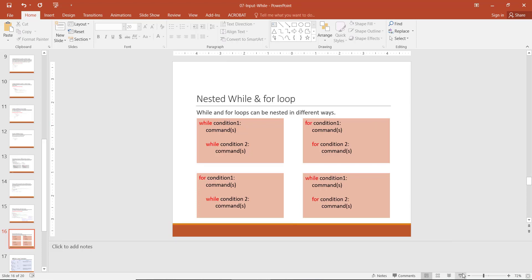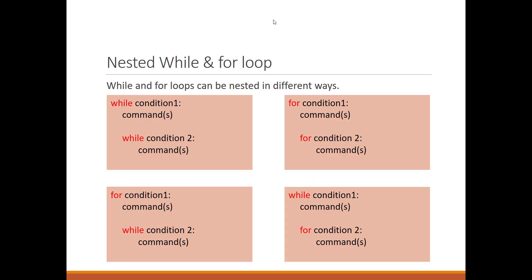Now the last topic that we have is the nested while and for loop. You already see this example. We just had a nested while loop, so when condition one is true, then all of this are run, and when condition two is true, these commands are run inside of the while loop.